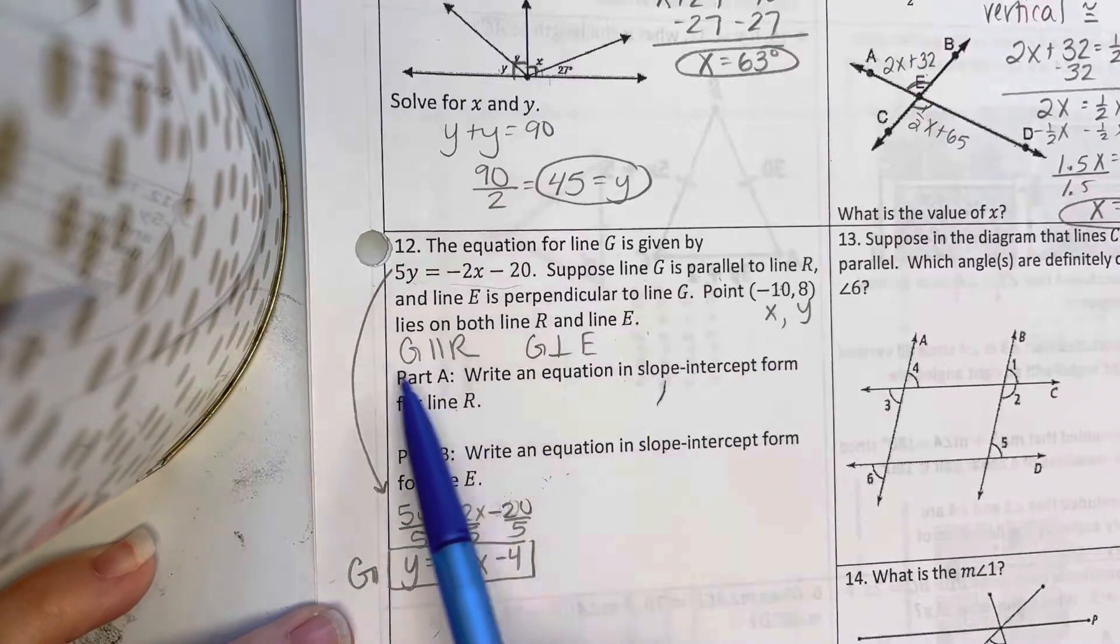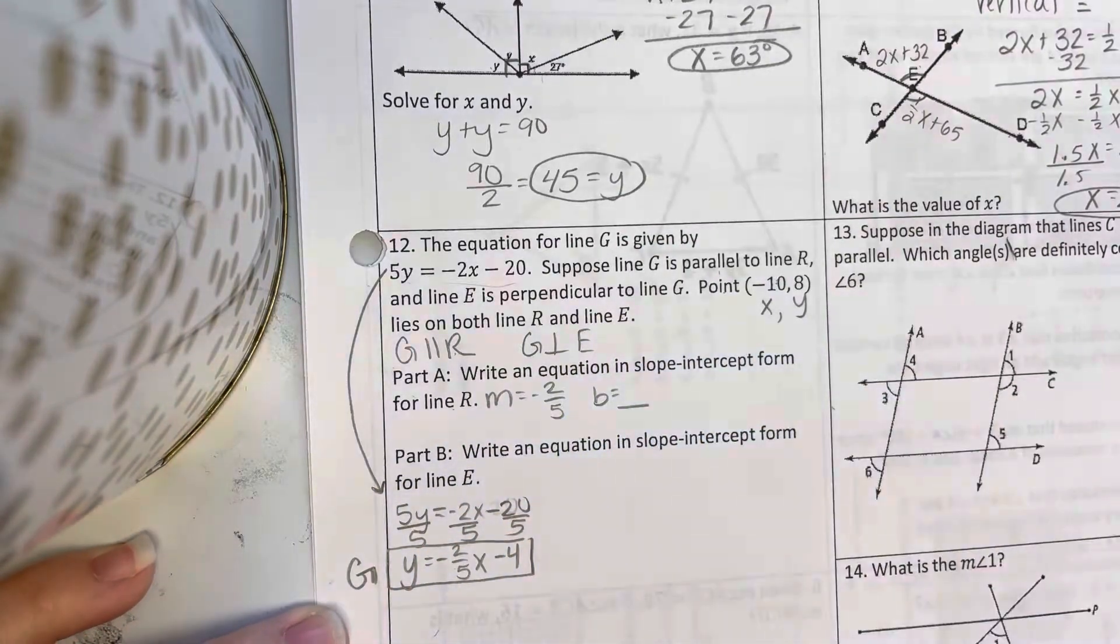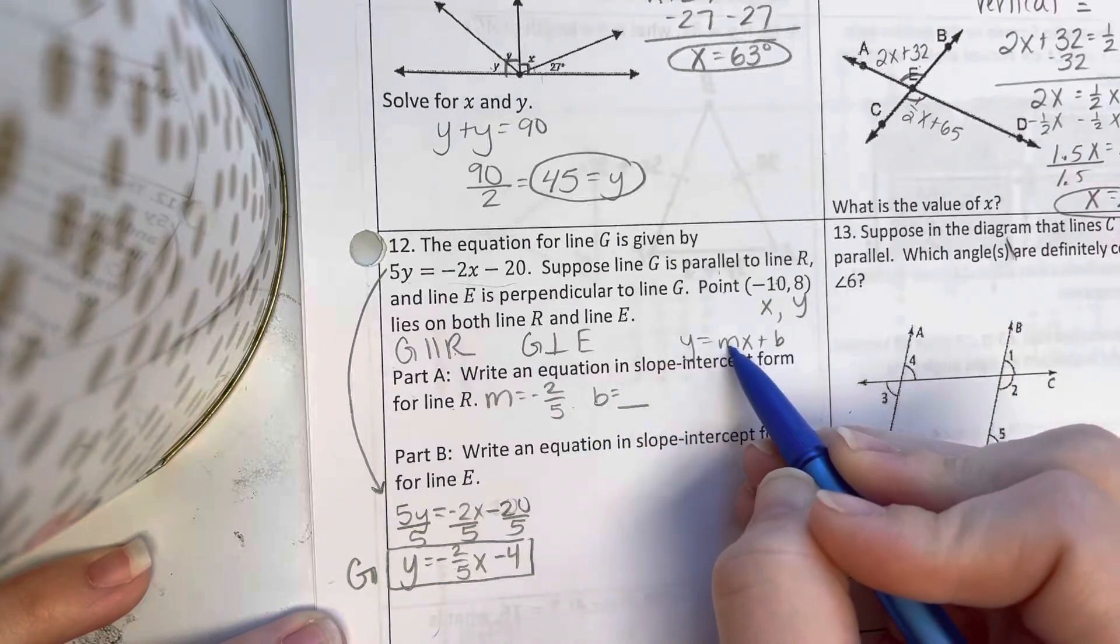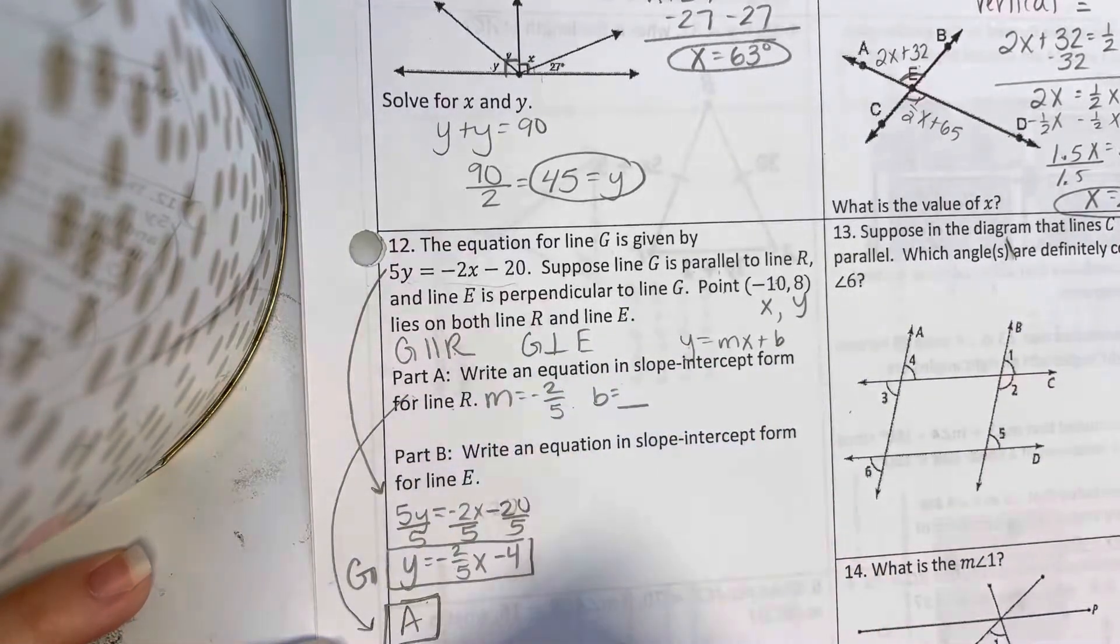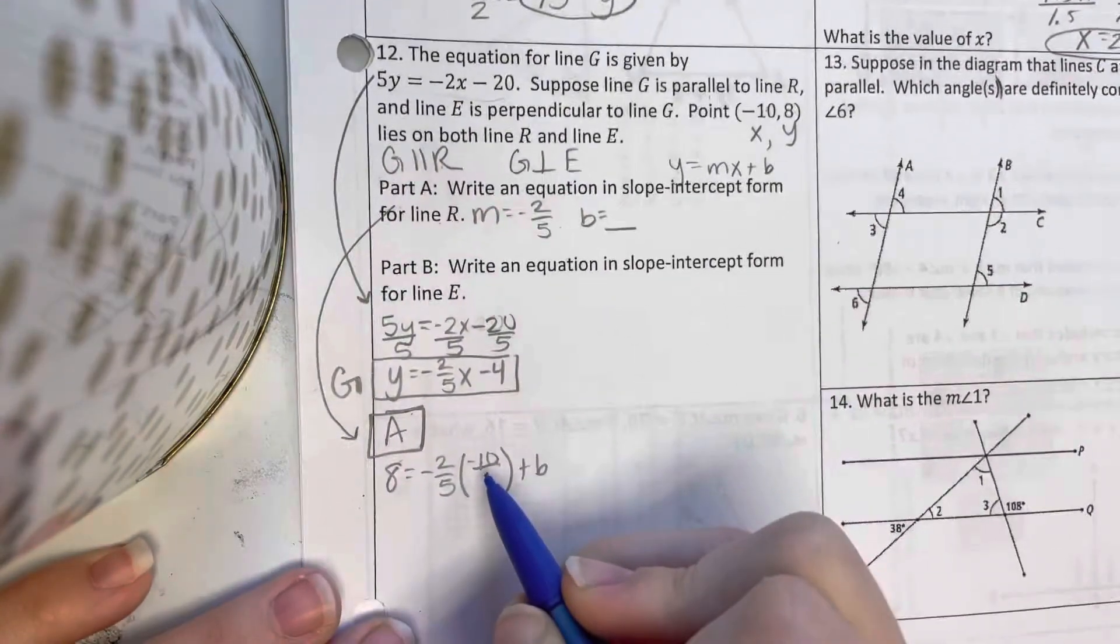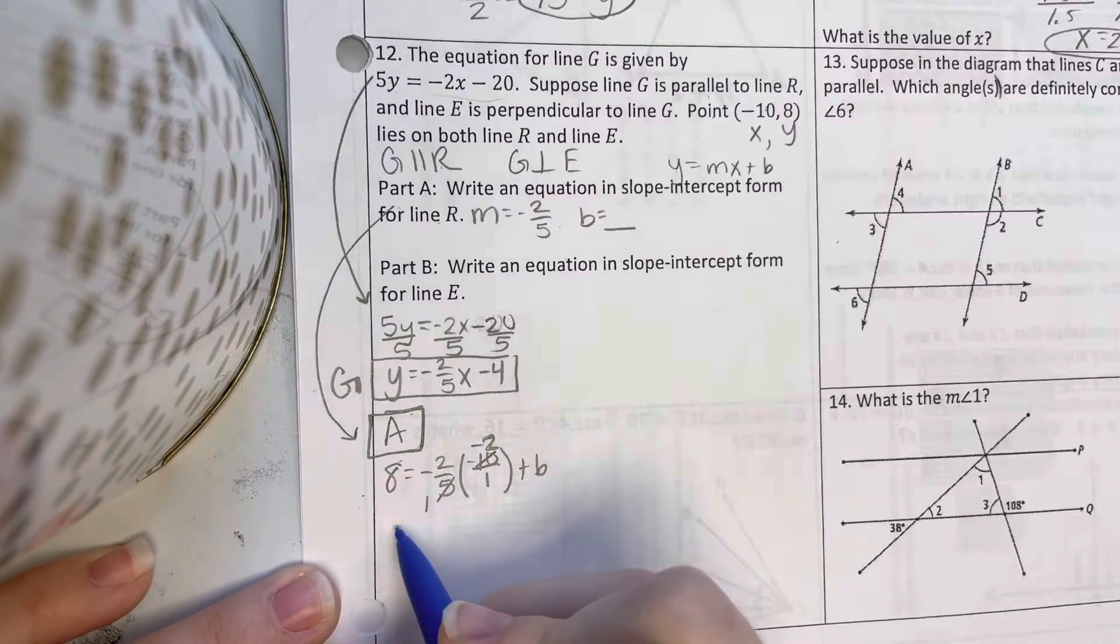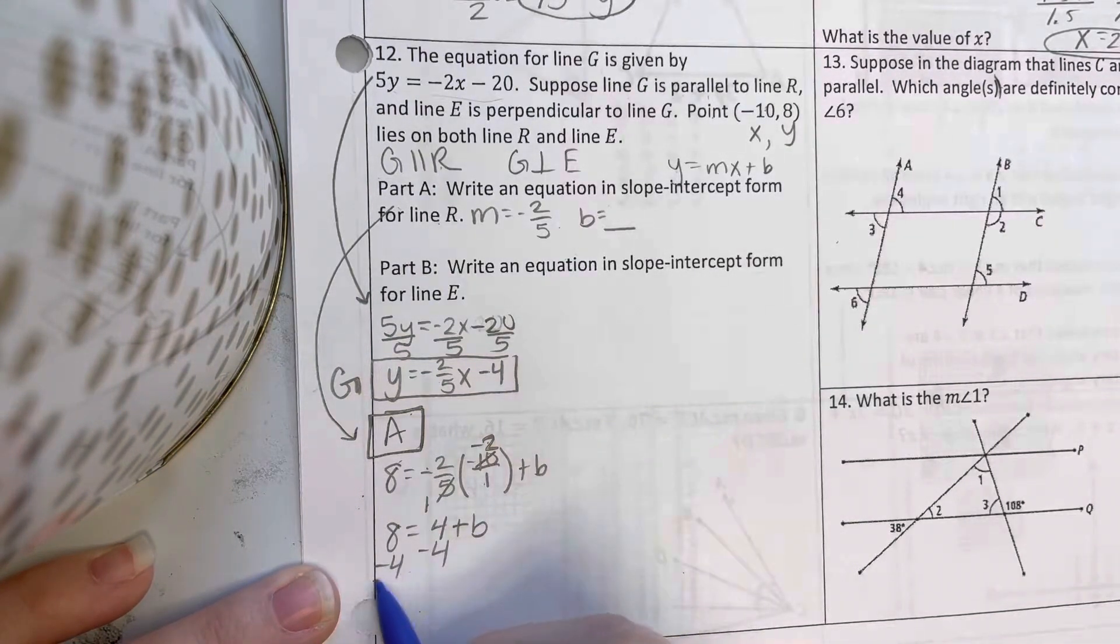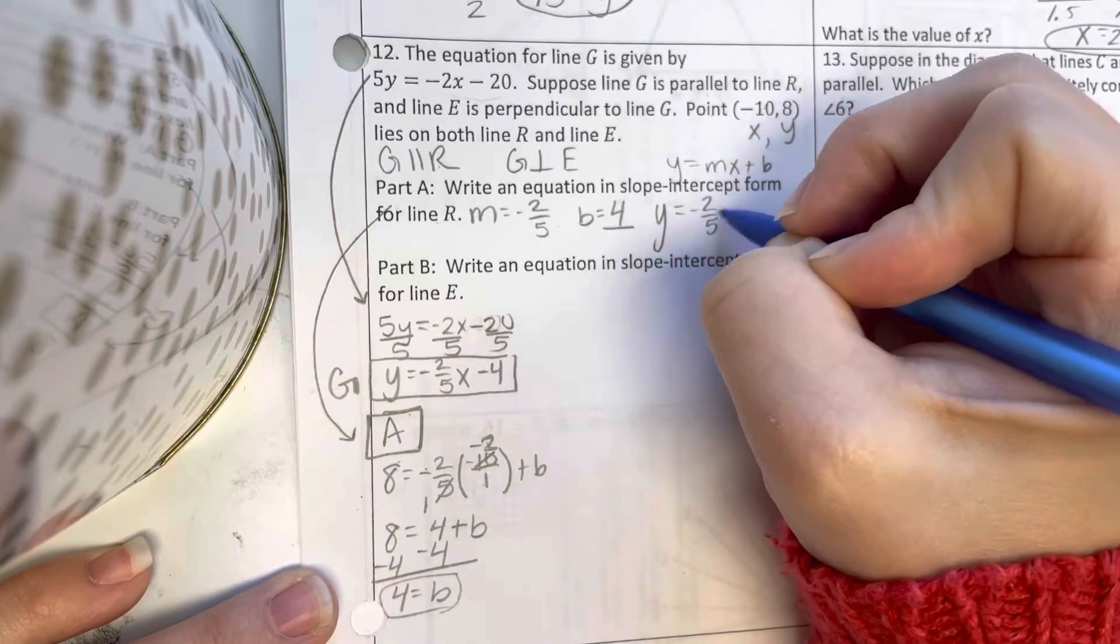So if I want to write an equation in slope-intercept form for line R, G and R are parallel. I should use the same slope. So I want to use M equals negative 2 over 5. I need to find B by using Y equals MX plus B. Here's the point that's on this line. Here's the slope. So I have Y, M, and X we're going to solve for B. So for part A, Y, 8 equals M times X plus B. I made this a fraction. I'm going to cross-simplify. 5 goes into 5 one time and goes into 10 two times. I'm left with negative 2. So 8 equals negative 2 times negative 2 is a positive 4, 1 times 1 on the bottom is not needed, plus B. Subtract 4. I get 4 equals B. So 4 is B. That means my equation is Y equals negative 2 over 5X plus 4.